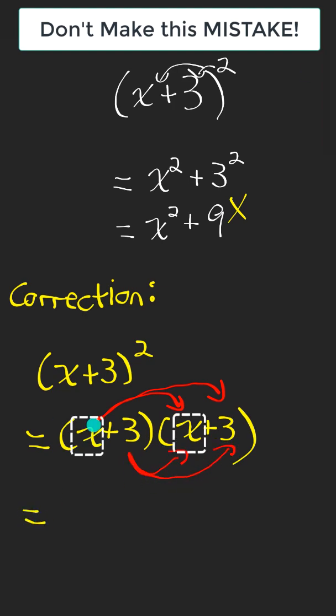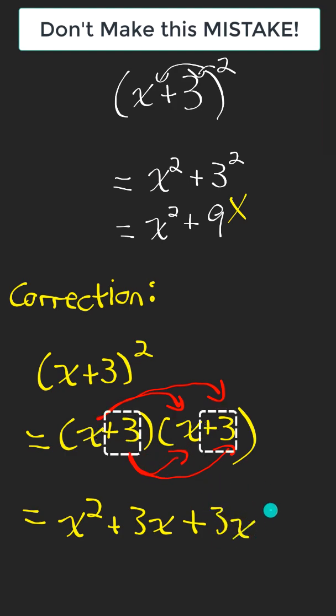Which gives me x times x is x squared plus x times 3 is 3x plus 3 times x is another 3x plus 3 times 3 is 9.